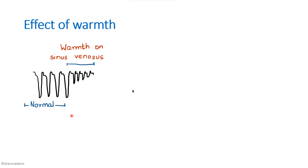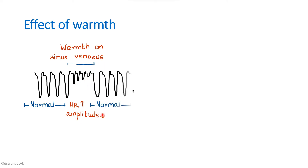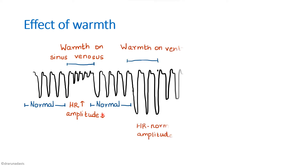Force of contraction is depicted by the amplitude of the graph. Since force of contraction decreases, the recording shows decreased amplitude. This decrease in amplitude is a secondary effect, whereas the increase in heart rate is the primary effect. The graph should show increased heart rate and decreased amplitude, followed by a return to normal recordings. When warmth is applied on the ventricles, the heart rate is normal but the force of contraction increases, shown by increased amplitude. This demonstrates that force of contraction is determined by the ventricles, whereas heart rate is determined by the sinus venosus.